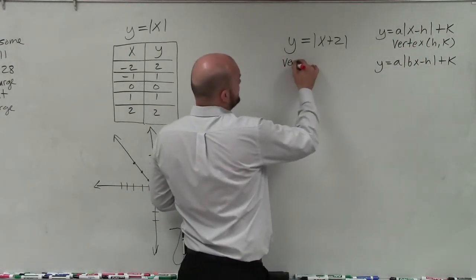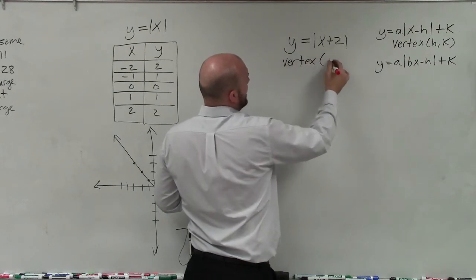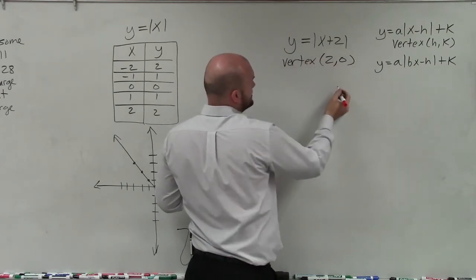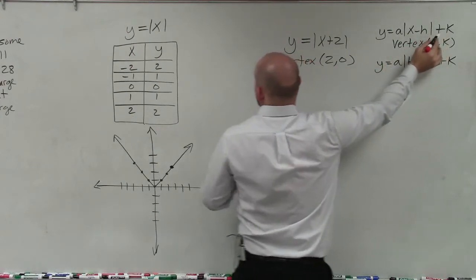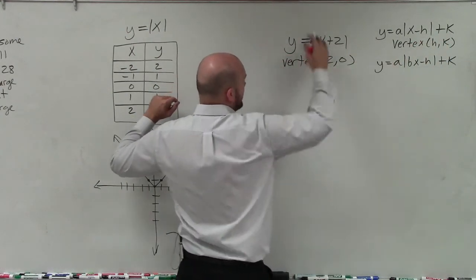So my vertex in this case is now going to be 2 comma 0 because I'm not adding anything, I'm not adding my k, right? I'm not adding a k here, so I'm not going up or down at all.